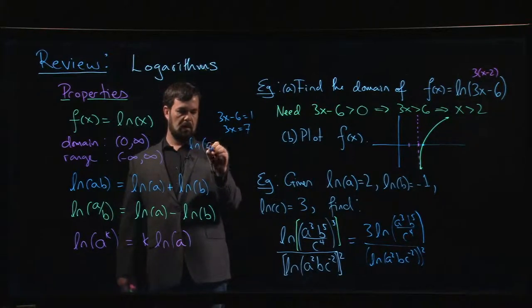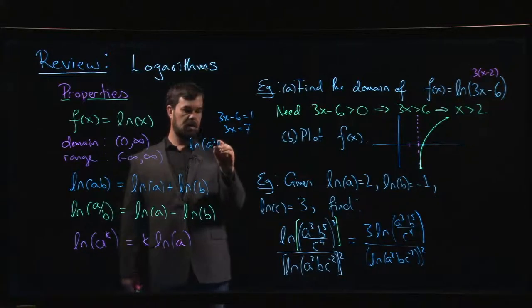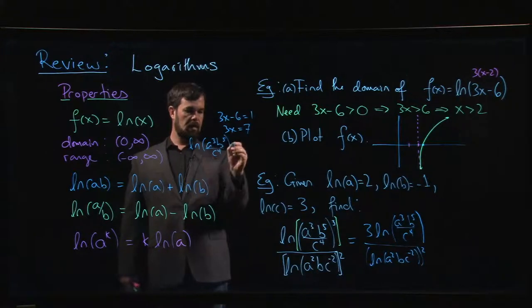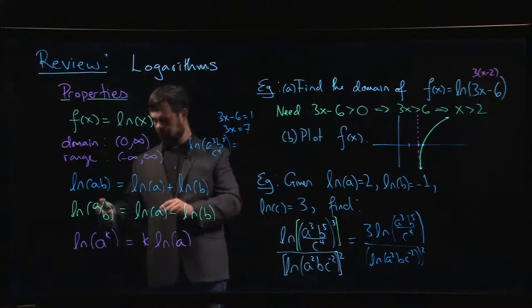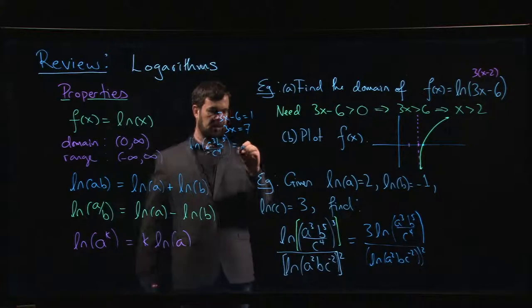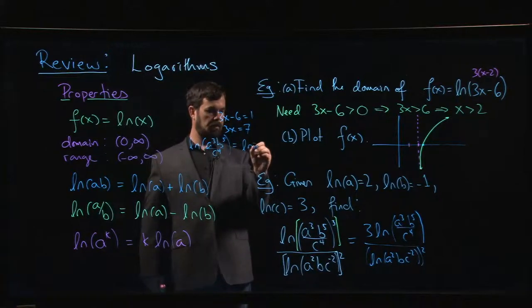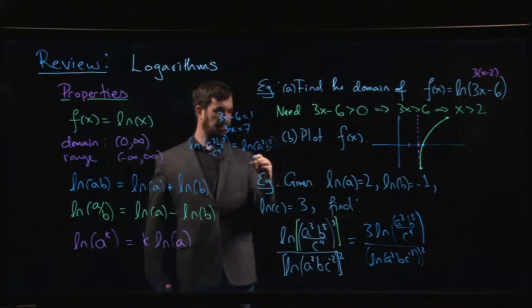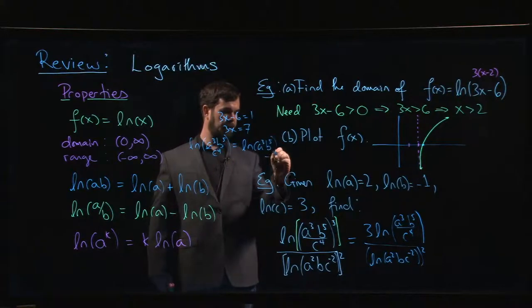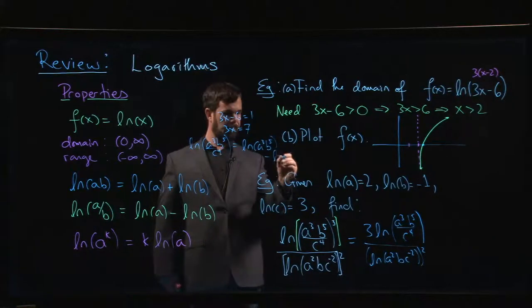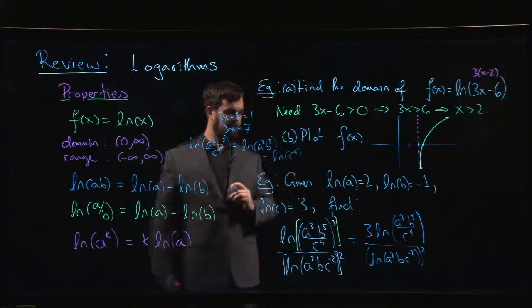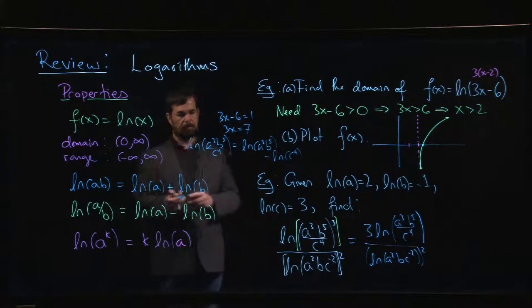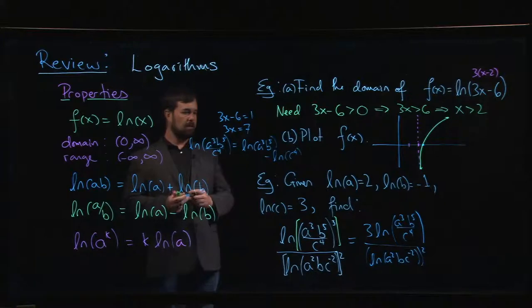With something like log a cubed b to the 5 over c to the 4, we could apply the quotient rule and say well, that's like the natural log of a cubed b to the 5 subtract the natural log of c to the 4.